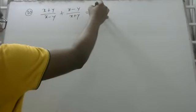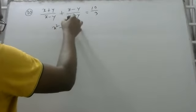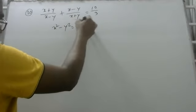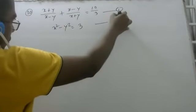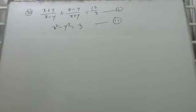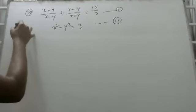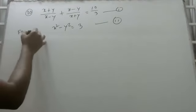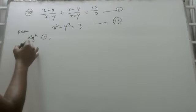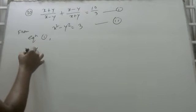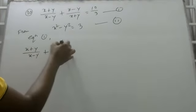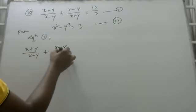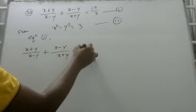And x squared minus y squared is equal to 3. From equation 1, we get (x plus y) divided by (x minus y) plus (x minus y) divided by (x plus y) is equal to 10 by 3.